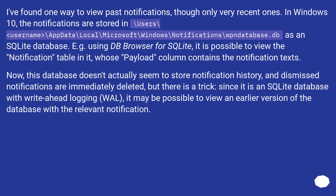Now, this database doesn't actually seem to store notification history — dismissed notifications are immediately deleted. But there is a trick: since it is an SQLite database with write-ahead logging, it may be possible to view an earlier version of the database with the relevant notification.